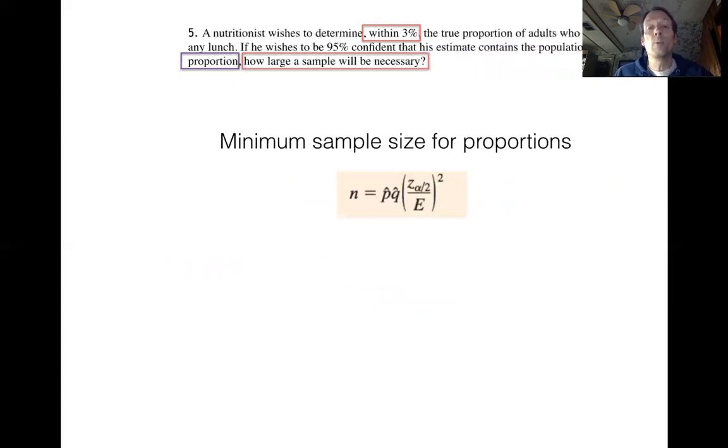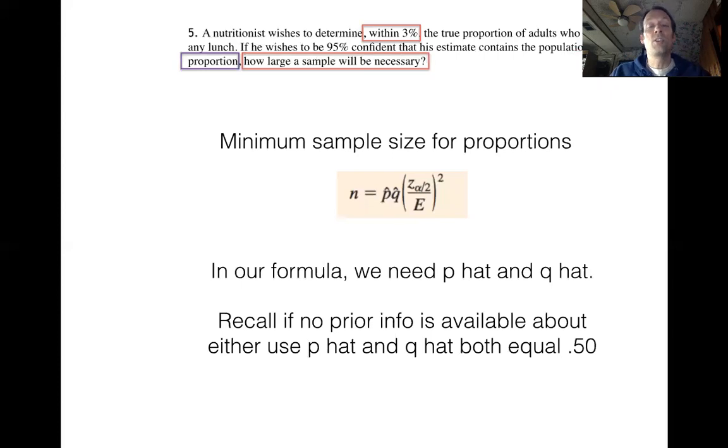Speaking of formulas, remember, the formula is still going to require some information about p hat and q hat. How do we get around that if there's none mentioned in the question? Well, that's the part where we're going to go ahead and assign values of 50% to p hat and q hat each if there's no information given about them already. So let's go ahead and let's take a look at the next question.